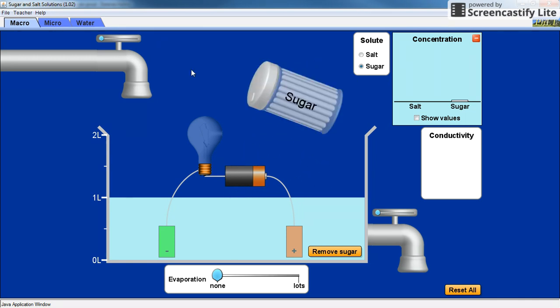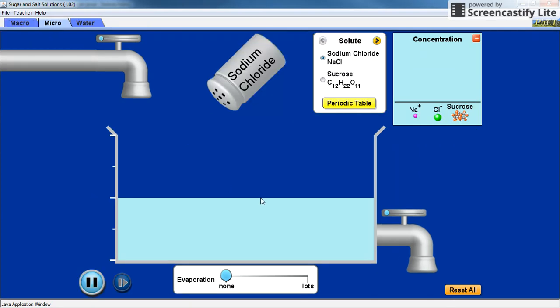So what is the difference between salt and sugar? We can explore further here in the micro tab. So again we've got the sodium chloride.